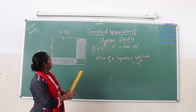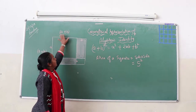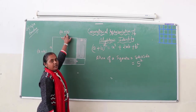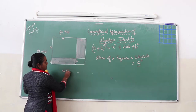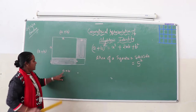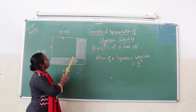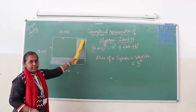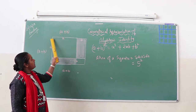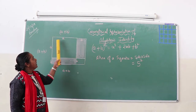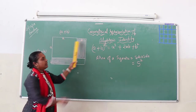We will consider a square whose measurement is a plus b on each side — this side is a plus b, this side also a plus b, all four sides of the square are a plus b. Since this whole length is a plus b, it should be divided in terms of a and b. We will consider one side: a portion of it to be a and the remaining to be b.